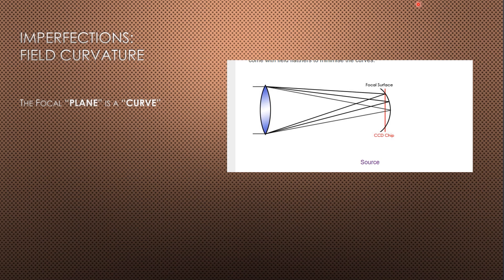Field curvature can be a problem with visual astronomy, but it's not a killer visually since our brain and optical system compensate. With imaging, however, it does cause a problem: imaging devices have flat chips while telescope optics naturally deliver a curved field. So we need something that converts and flattens this curved field — sensibly enough called a field flattener.